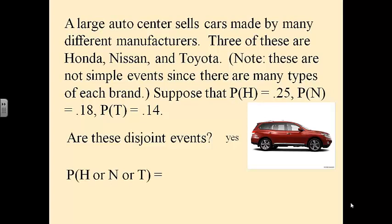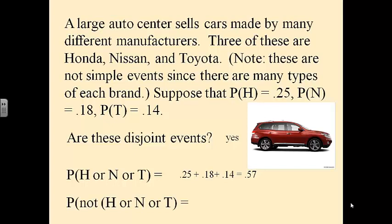Probability of H or N or T: we would add them all up. Probability of H is 0.25, probability of N is 0.18, probability of T is 0.14, so altogether we get a probability of 0.57. By the way, that's a picture of my new car. The probability that it is not H or N or T would be 1 minus 0.57, which is 0.43. If it's H or N or T, it's 0.57. If it's not H or N or T, then it's 0.43.